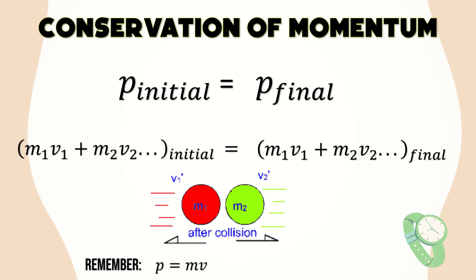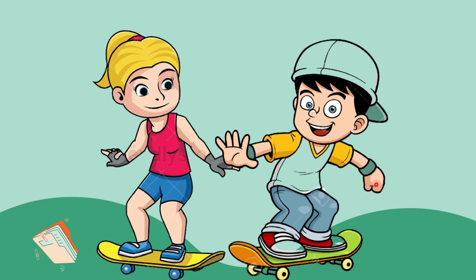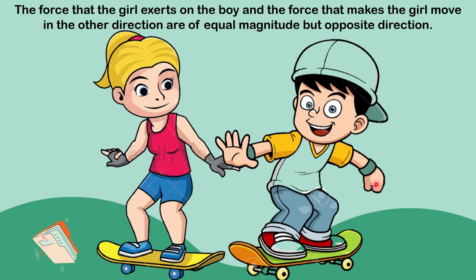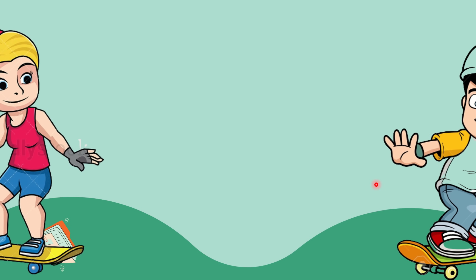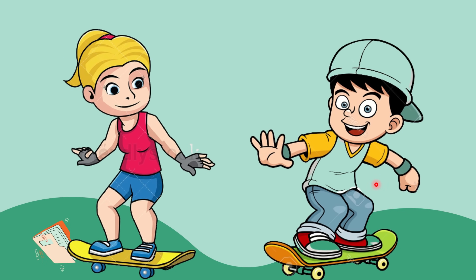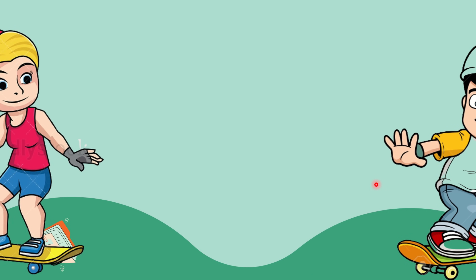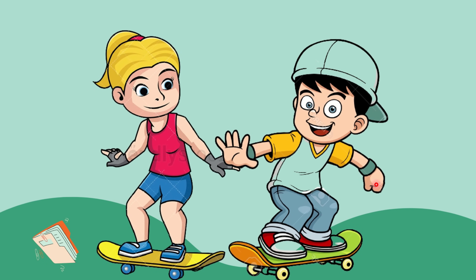Let's have another example. Two children on skateboards are initially at rest. They push each other so that the boy moves to the right while the girl moves in the opposite direction. Newton's third law tells us that the force the girl exerts on the boy and the force that makes the girl move in the other direction are equal in magnitude but opposite in direction. The boy and girl make up a system, and no unbalanced external force acts on it. Thus, the total momentum of the system does not change — momentum is conserved.